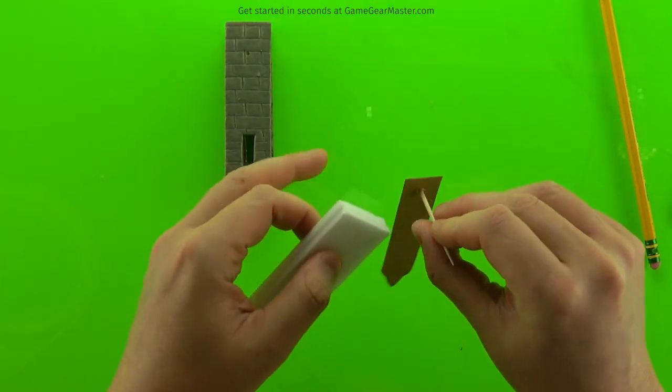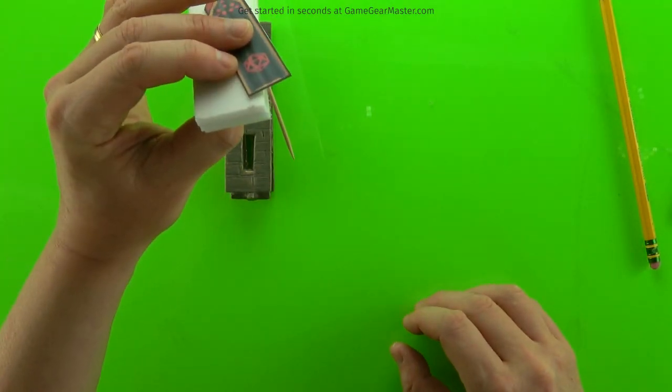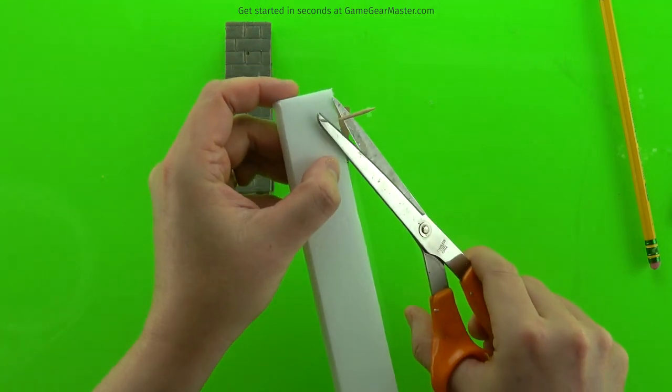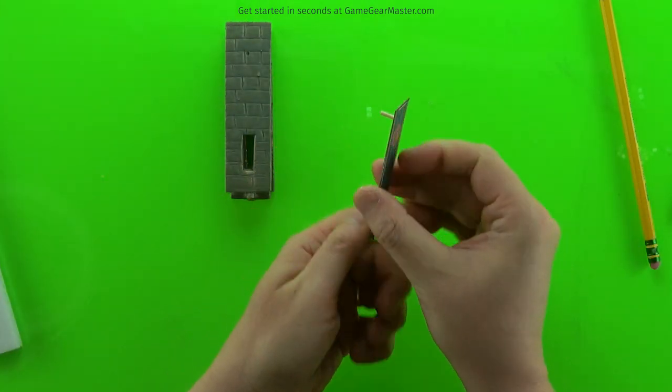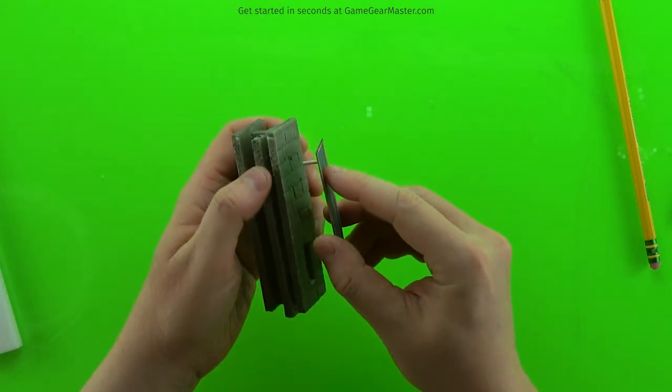And then once that's dry, we're going to use two pieces of foam board to set the depth of that toothpick. In other words, that toothpick should be the length of two thicknesses of foam board. And that's it. You're done. You've made your first decorator.